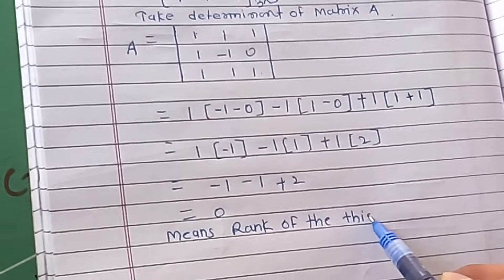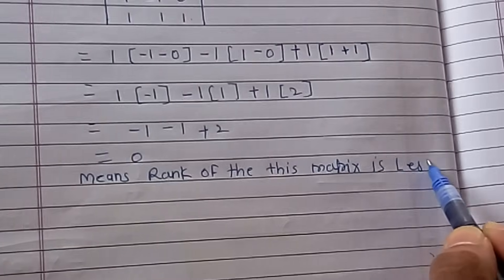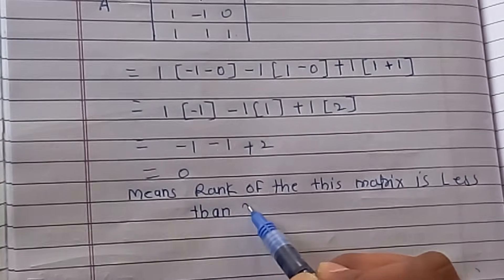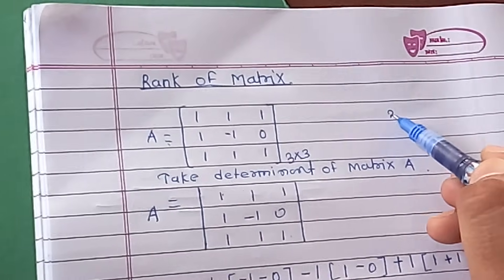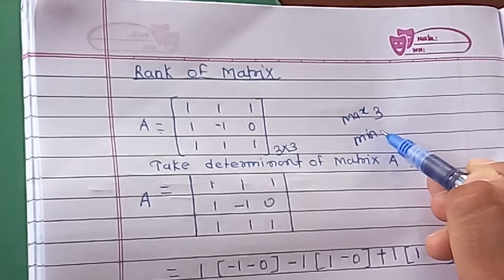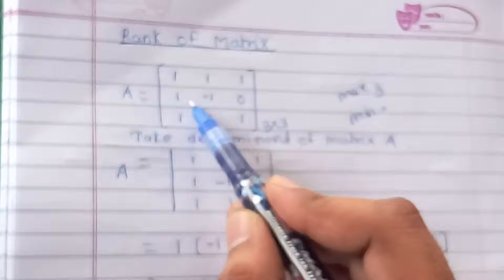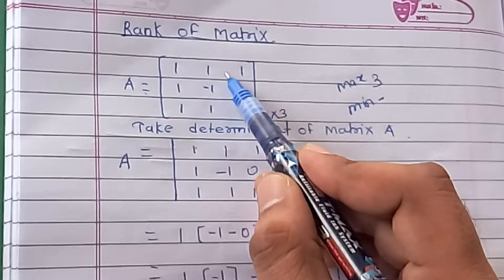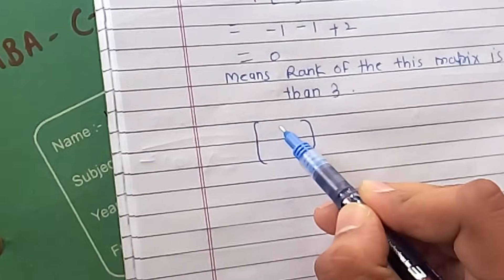The meaning of the determinant being zero is that the rank of this matrix is less than three, because the maximum possible rank of this 3x3 matrix is three. So we need to find out the actual rank, which could be less. For that purpose we have to consider 2x2 submatrices.